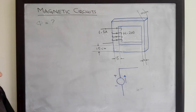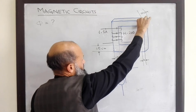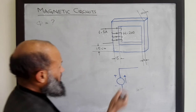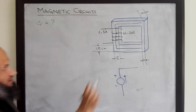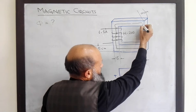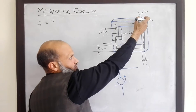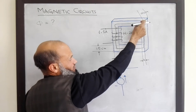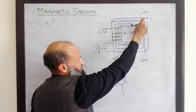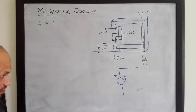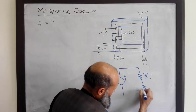To determine the overall reluctance, we split the whole core into two parts: the part with one cross-sectional area and the part with a different cross-sectional area. So the equivalent circuit is a voltage source with two reluctances, R1 and R2, connected in series.